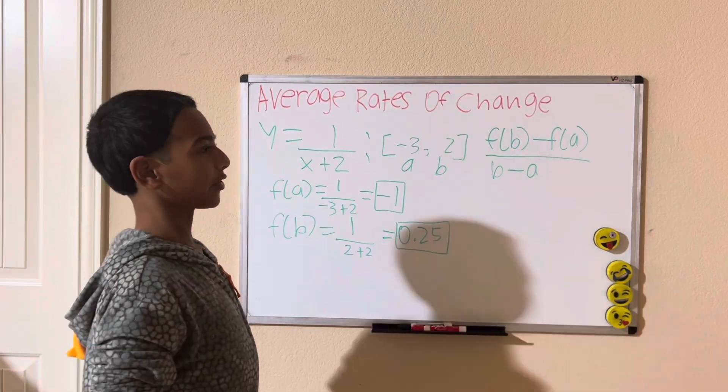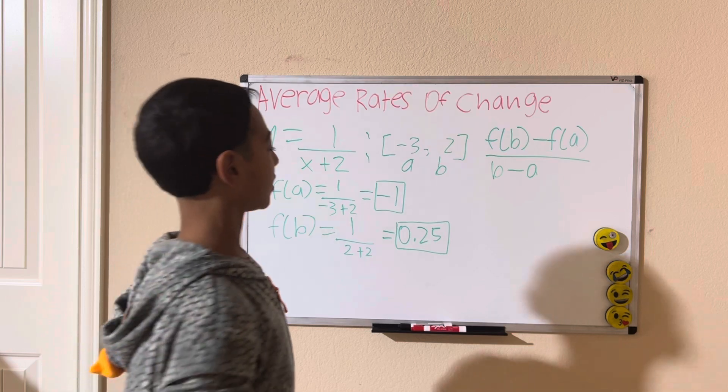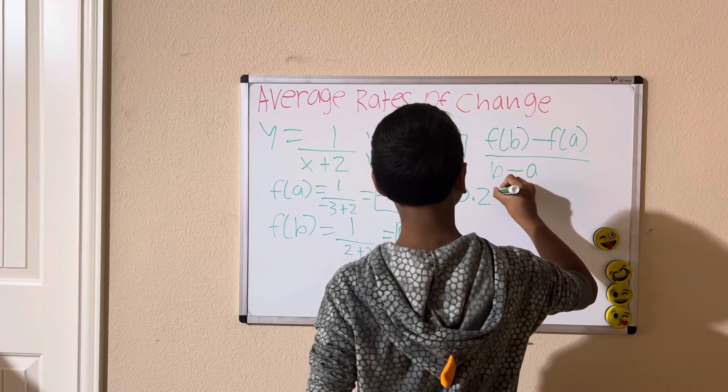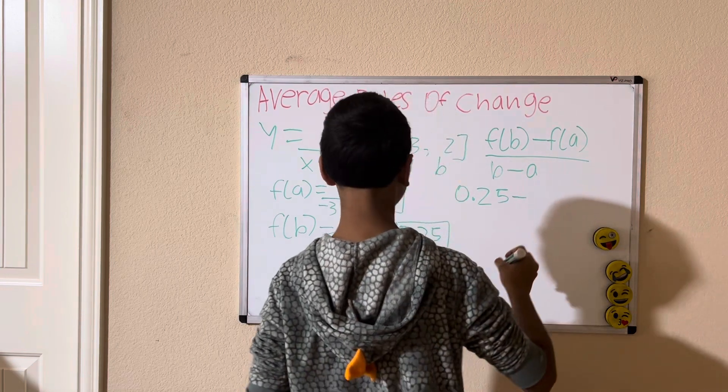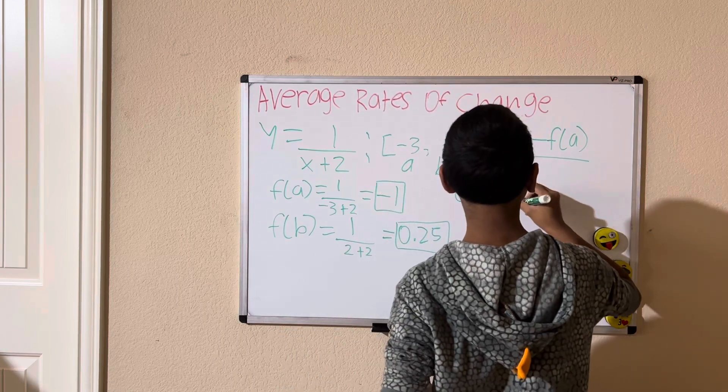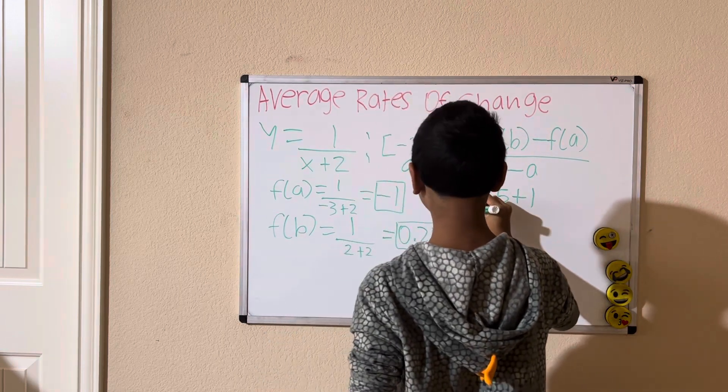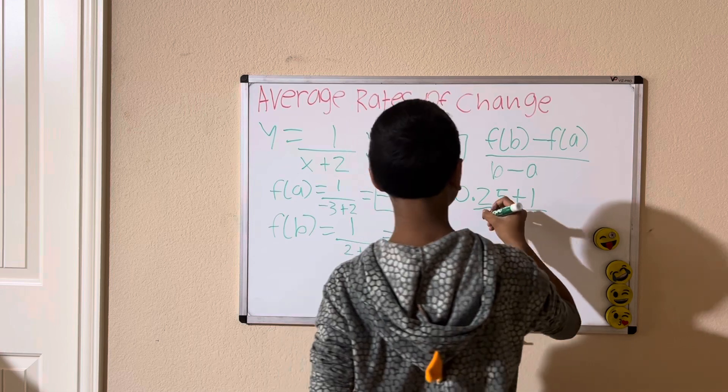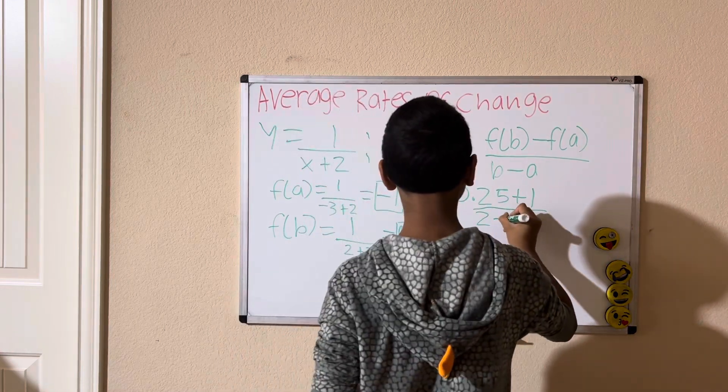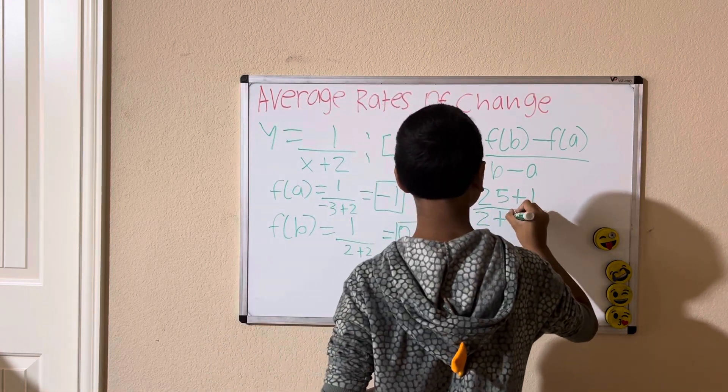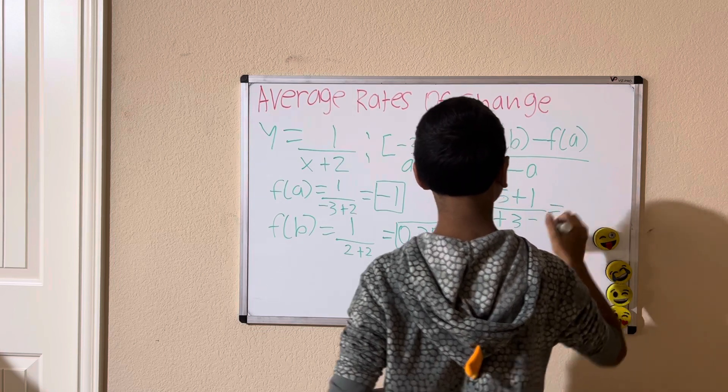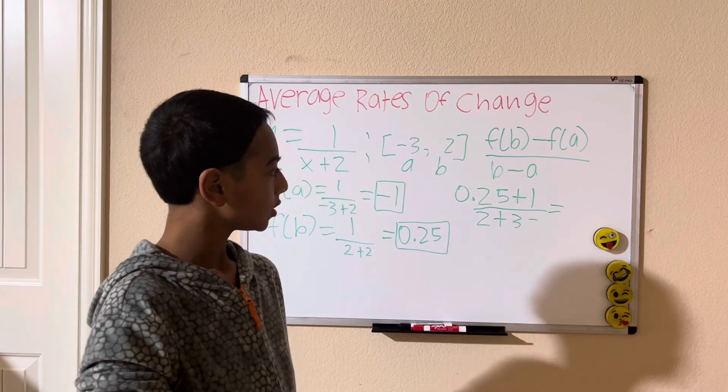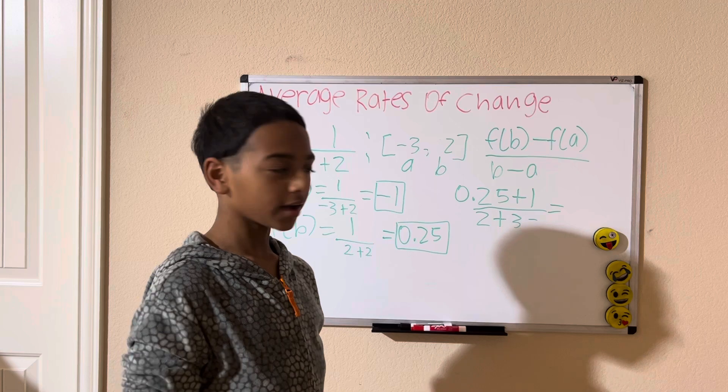So, now that we got f of b and f of a, we can plug them into the formula. So, you're going to have 0.25 minus negative 1, which is adding a positive 1, all over b minus a, which is 2 minus negative 3, or 2 plus 3. So, 0.25 plus 1 is 1.25, and 1.25 divided by 5. That is our solution.